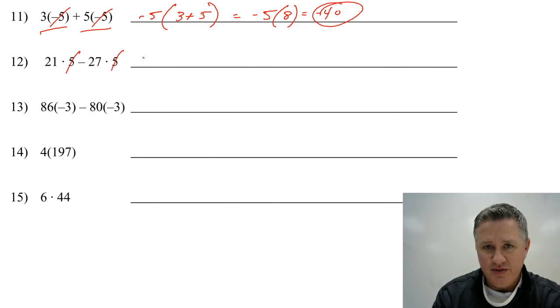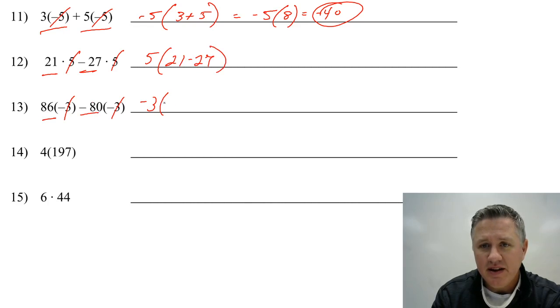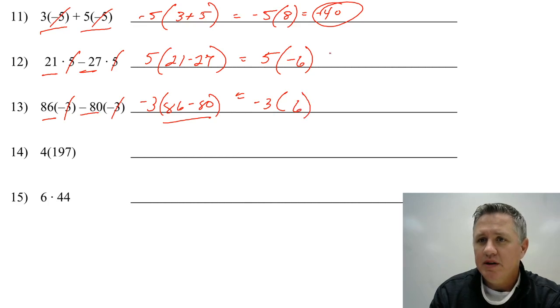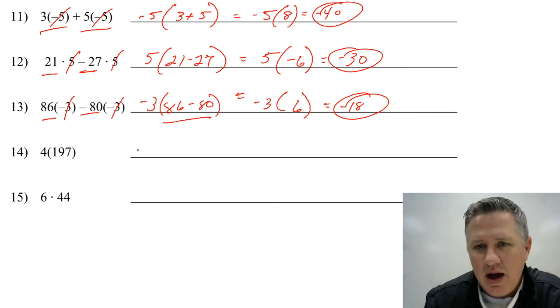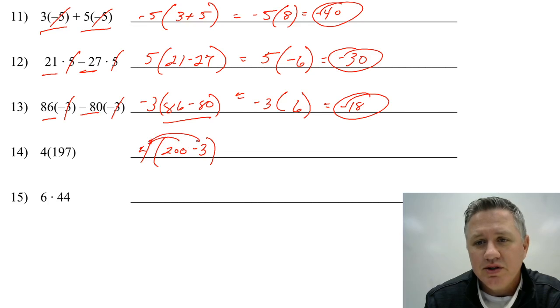Next one. What do these two have in common? The 5, right? What do these two have in common? Negative 3. So we're going to pull out the 5, and we're going to pull out the negative 3. Well, what's left? 21 minus 27. What's left down here? 86 minus 80. And now let's do it. 5 times... What's 21 minus 27? It's negative 6. I still have the negative 3 on the outside here. What's 86 minus 80? It's 6. So, up here, I wind up getting negative 30. Down here, I wind up getting negative 18. And this guy... I'm going to go backwards. I'm going to say what's close to 197. I'm going to say 200. Subtract 3. Because those are two easy problems. 4 times 200 is 800. 4 times 3 is 12. Subtract 10 and subtract 2 more. And you wind up getting 788.